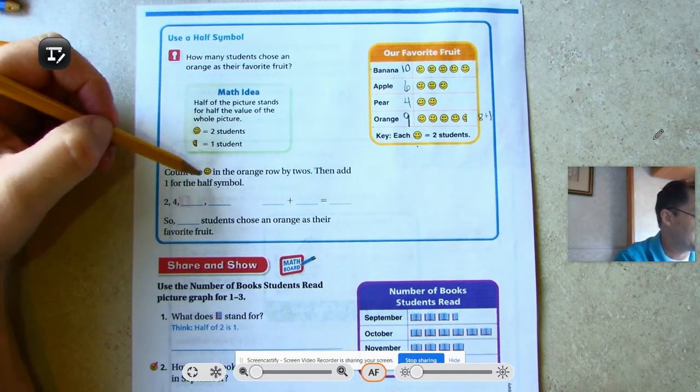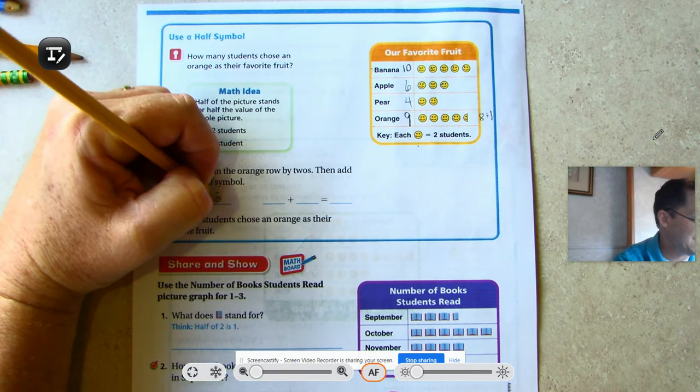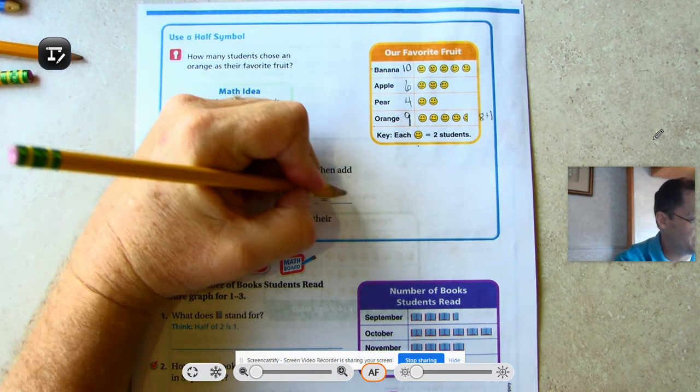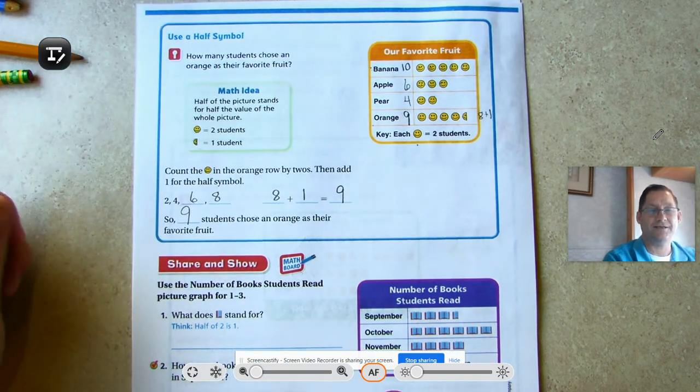So count the happy faces in the orange by twos, then add one. 2, 4, 6, 8, and like I showed you up there, we added one. So nine students chose an orange as their favorite fruit.